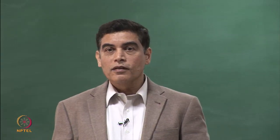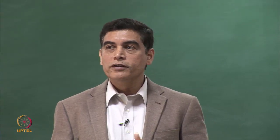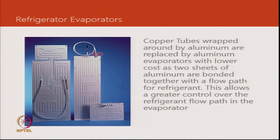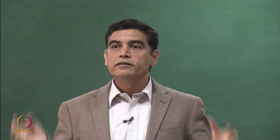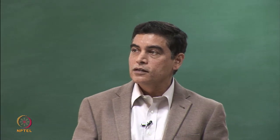Before the suction line reaches the compressor, there may be an accumulator to handle any surge or refrigerant droplets of R134A or R12. When designing a refrigerator evaporator, the refrigerant flow path is defined — the lines visible on the roll-bond evaporator represent the refrigerant path. The component is shipped flat and then formed by bending into a C-section or rectangular section to create the freezer, forming the basic heat transfer component inside the refrigerator.